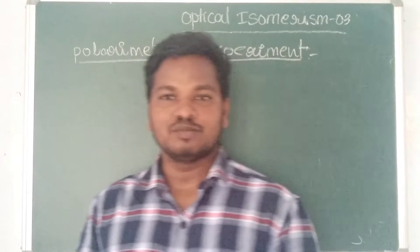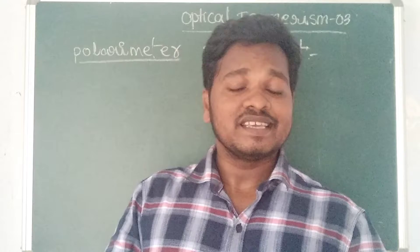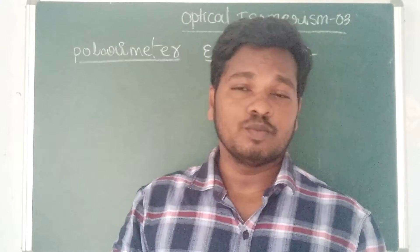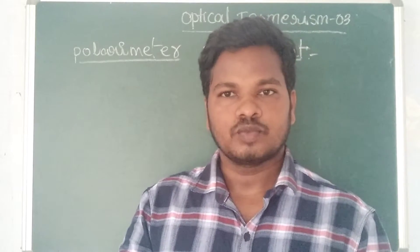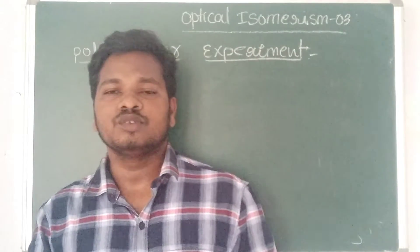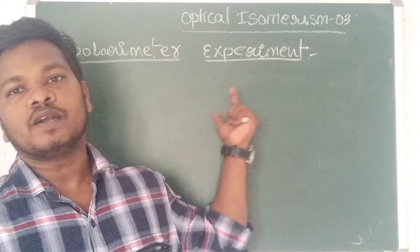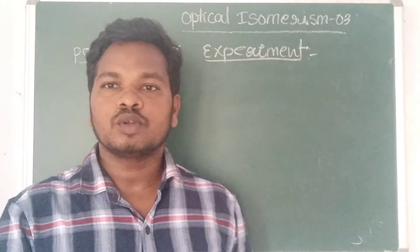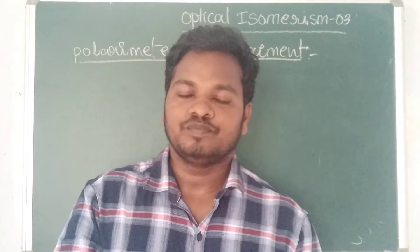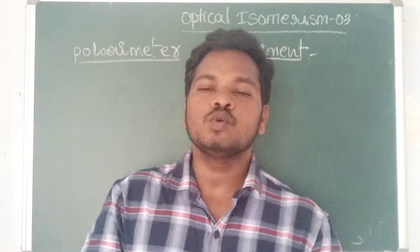Hello everyone, welcome to Easy Chemistry. In the organic chemistry series, we have already discussed structural isomerism, geometrical isomerism, and optical isomerism parts 1 and 2. Now we are going to discuss part 3. In this video, we'll discuss the polarimeter experiment — how to identify whether a given compound is optically active or optically inactive.